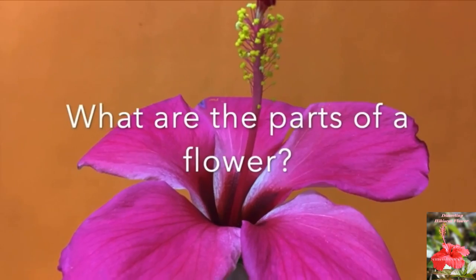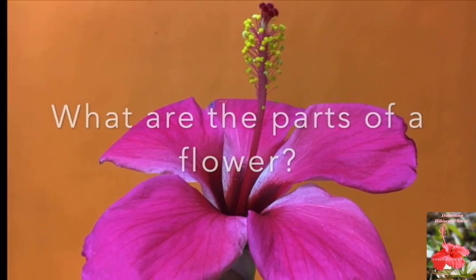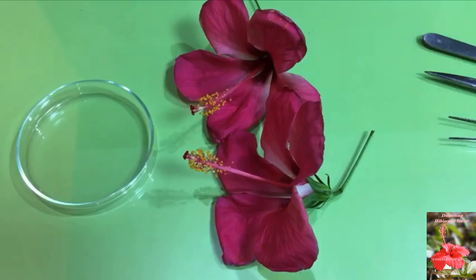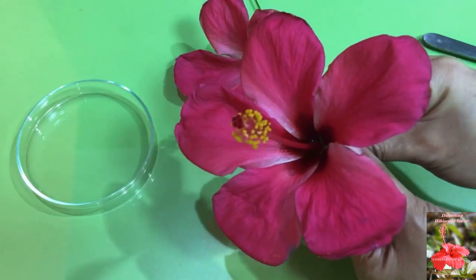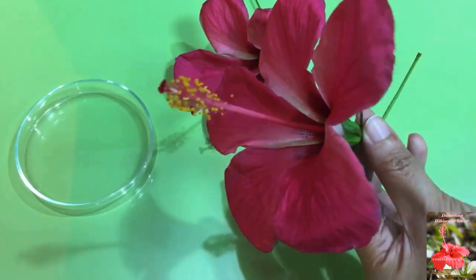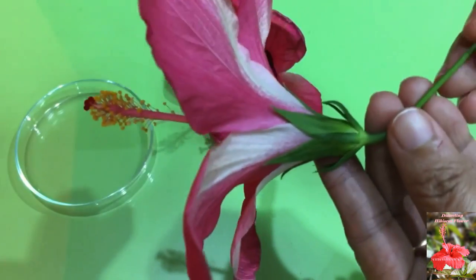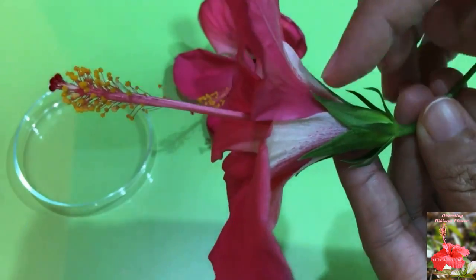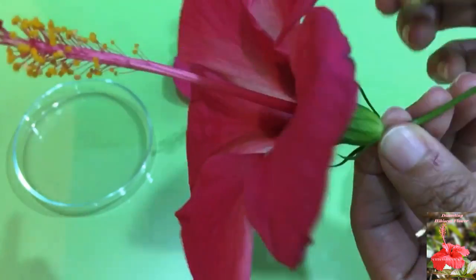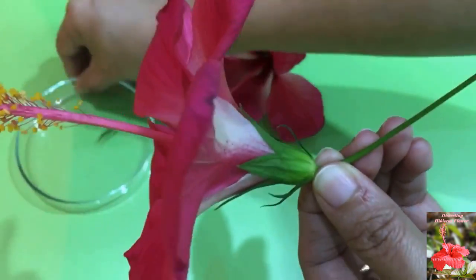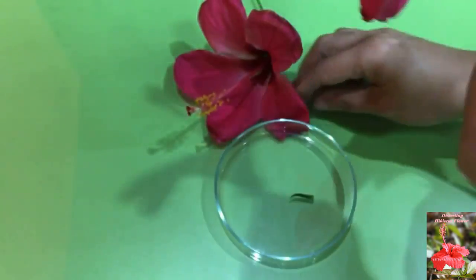But I will explain the parts of it. What are the parts of the flower? This is a hibiscus flower. Now we will start dissecting the flower.